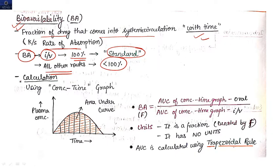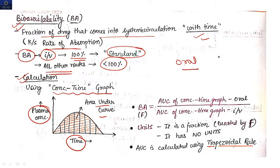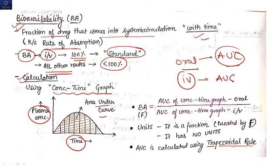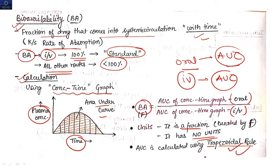All other routes except IV have bioavailability less than 100%, and we calculate the bioavailability of other routes compared to the IV route. We use a concentration-time graph — plasma concentration on the Y-axis and time on the X-axis — and we generally calculate the area under the curve (AUC). Bioavailability equals the AUC of the concentration-time graph when given by oral route divided by AUC when given by IV route. It is a fraction and has no unit. It is also calculated using the trapezoidal rule.